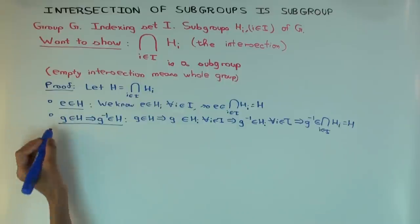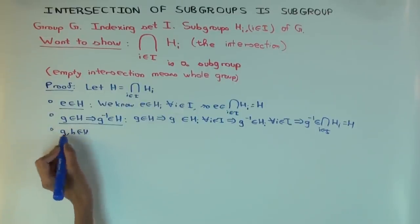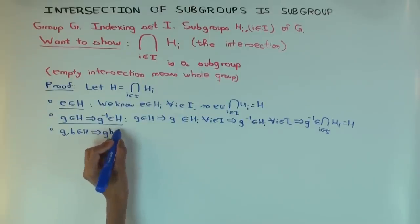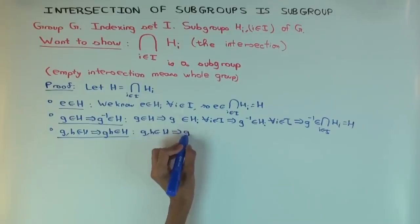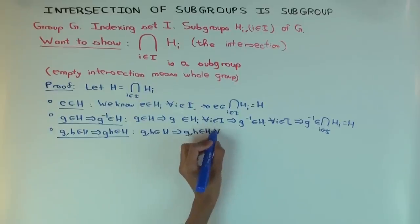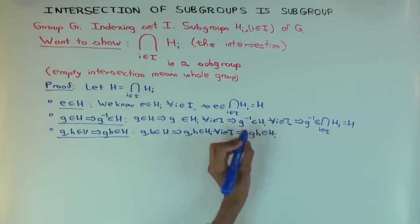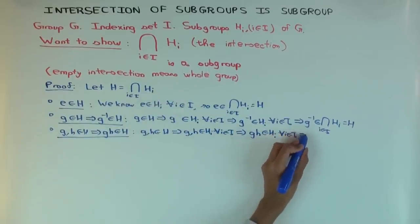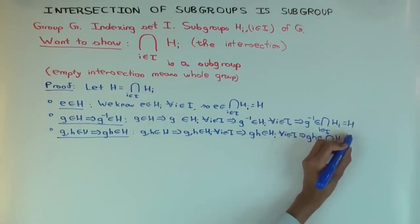The last thing we want to show is closure under multiplication. We want to show that g and h in h implies gh is in h. It's the same logic: g and h in h implies g and h are in each h_i for all i. That implies gh is in each h_i, because each h_i is a subgroup and is closed under multiplication. That implies gh is in the intersection, which is h. So that's it.